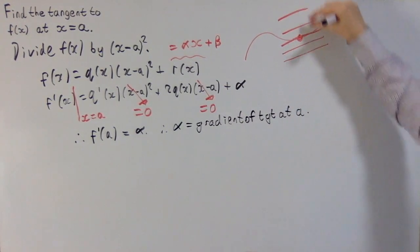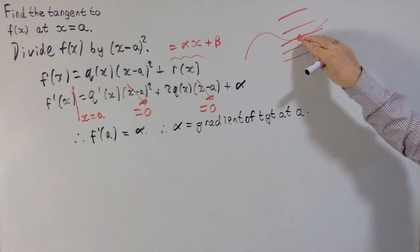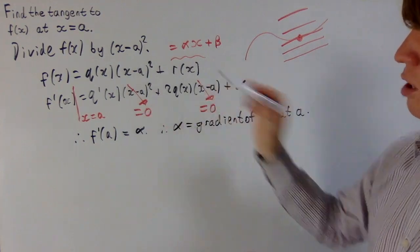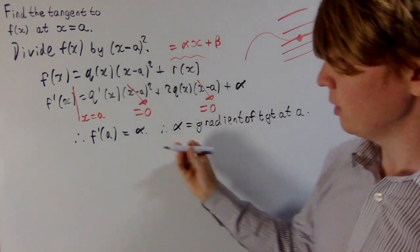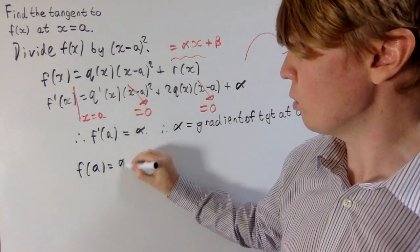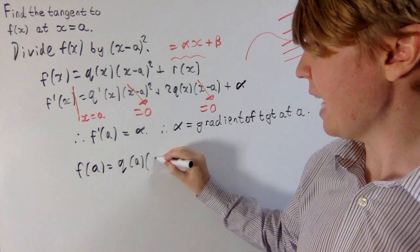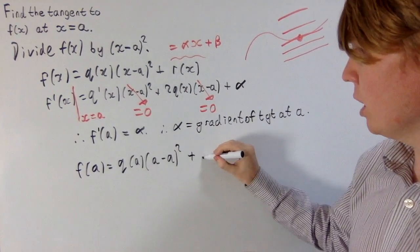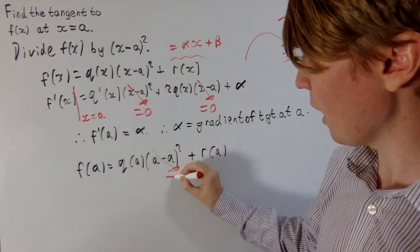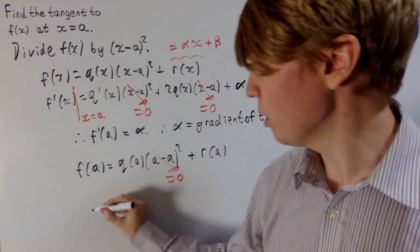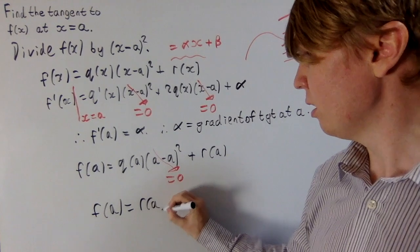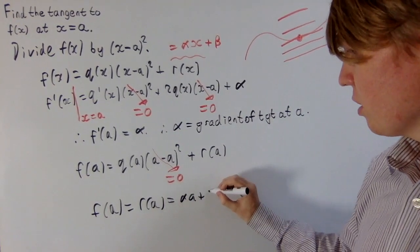So now all we need to do is we've verified that it's one of these lines, we need to make sure that it does actually meet our curve f of x. So all we need to do here is we're going to substitute a into f of x, substitute it into r of x, hopefully these will match up. Okay, so f of a, using our nice quotient remainder form here, this is equal to q of a multiplied by a minus a all squared, plus r of a. And you can see here you've got a minus a all squared. Once again, this is just equal to 0, that's nice. So you can conclude then that f of a, this is equal to r of a, which is our alpha a, plus beta.